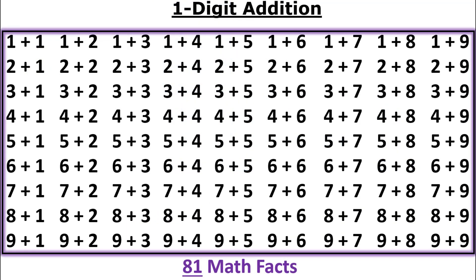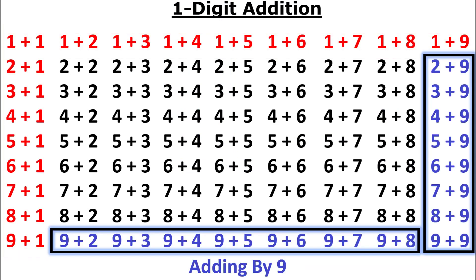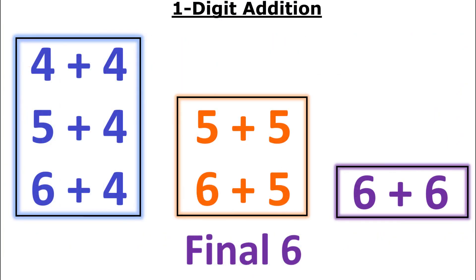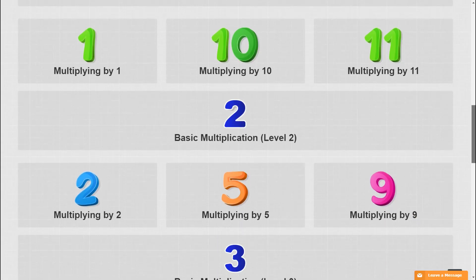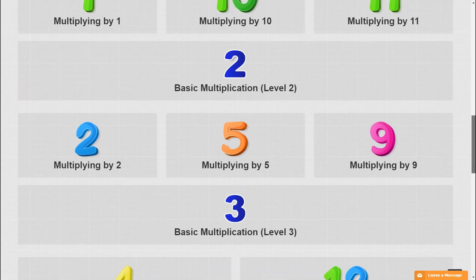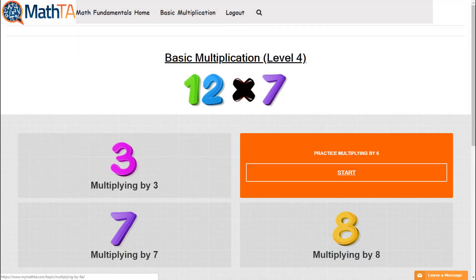Instead of 81 addition facts, using six key strategies, there are only six facts remaining. Each rule is organized in a strategic sequence to minimize time and maximize results and confidence.